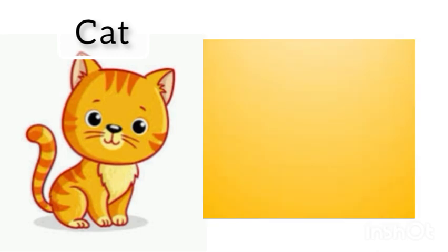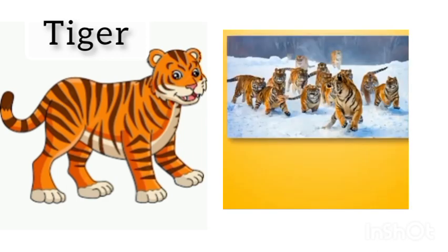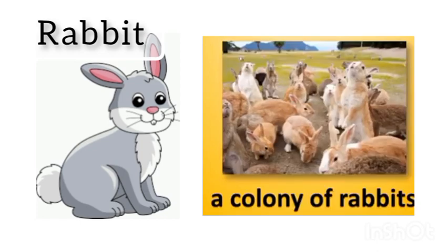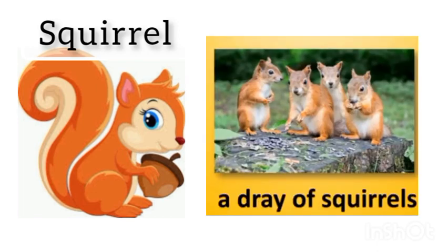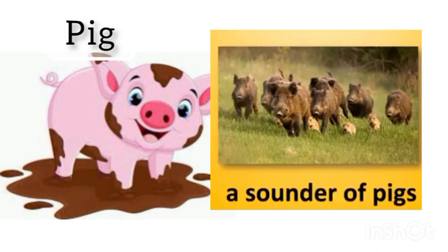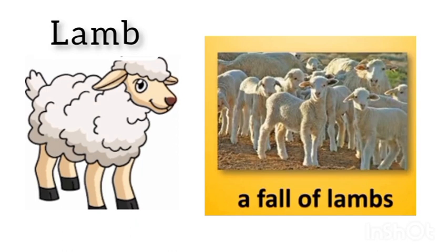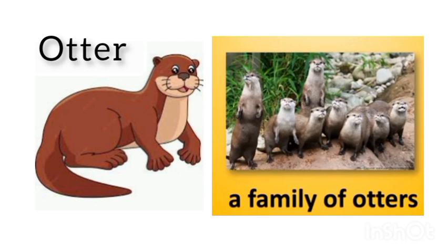Cat: a clouder of cats. Zebra: a cohort of zebras. Tiger: an ambush of tigers. Rabbit: a colony of rabbits. Squirrel: a dray of squirrels. Pig: a sounder of pigs. Lamb: a fall of lambs. Otter: a family of otters.